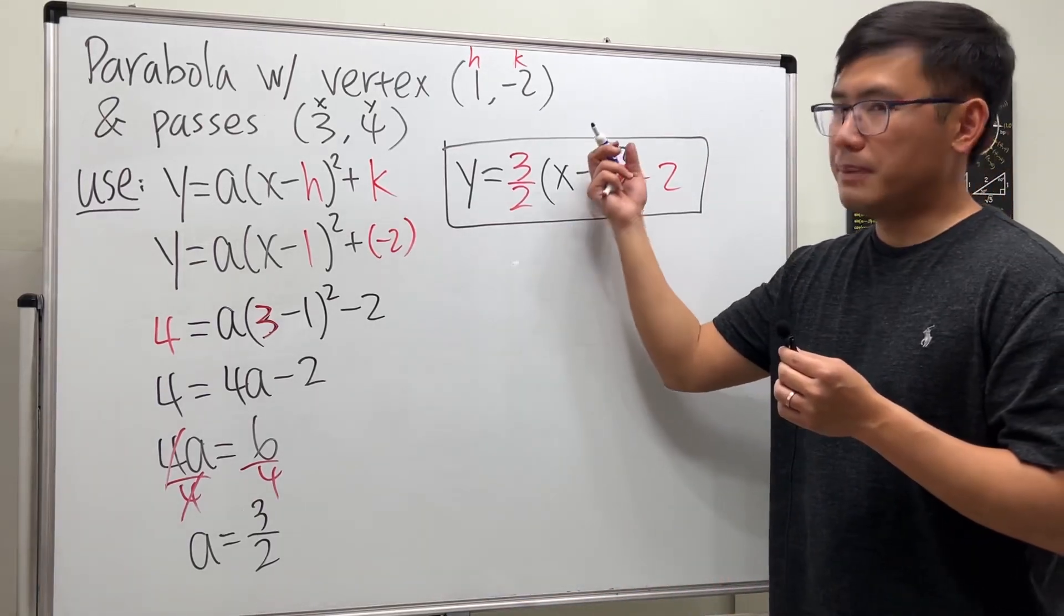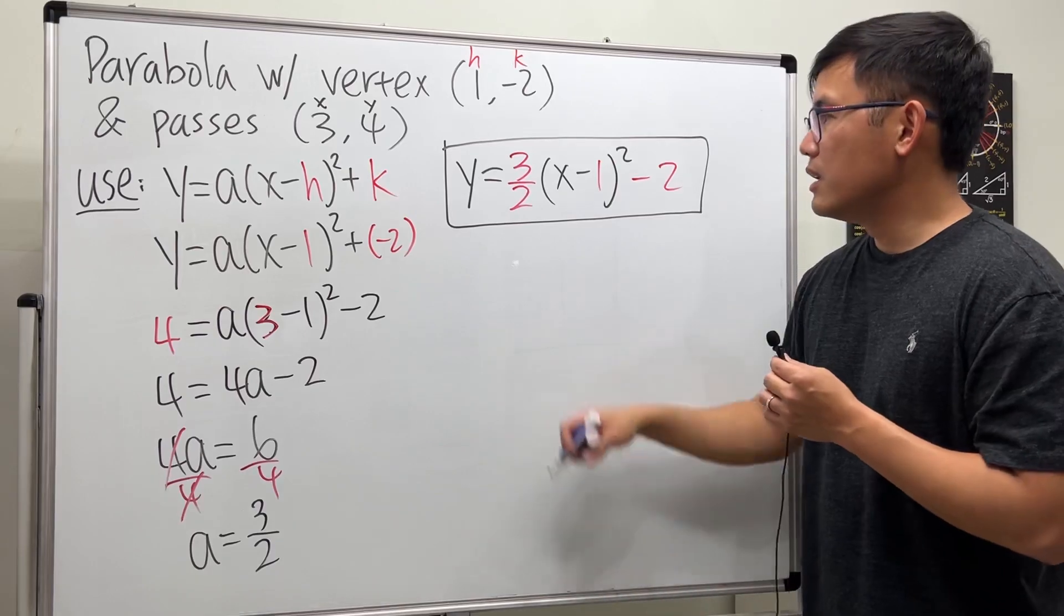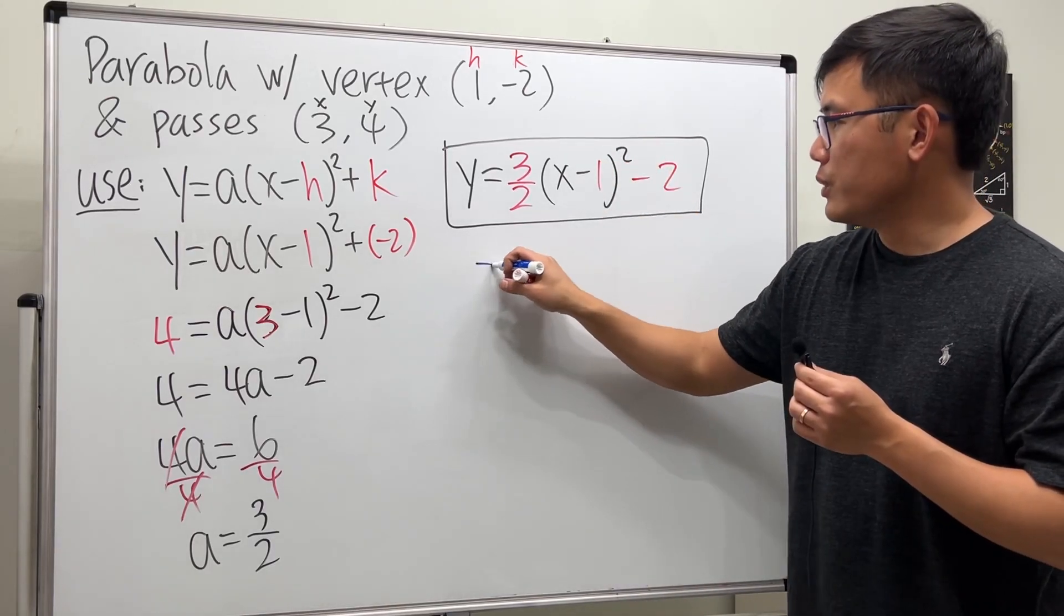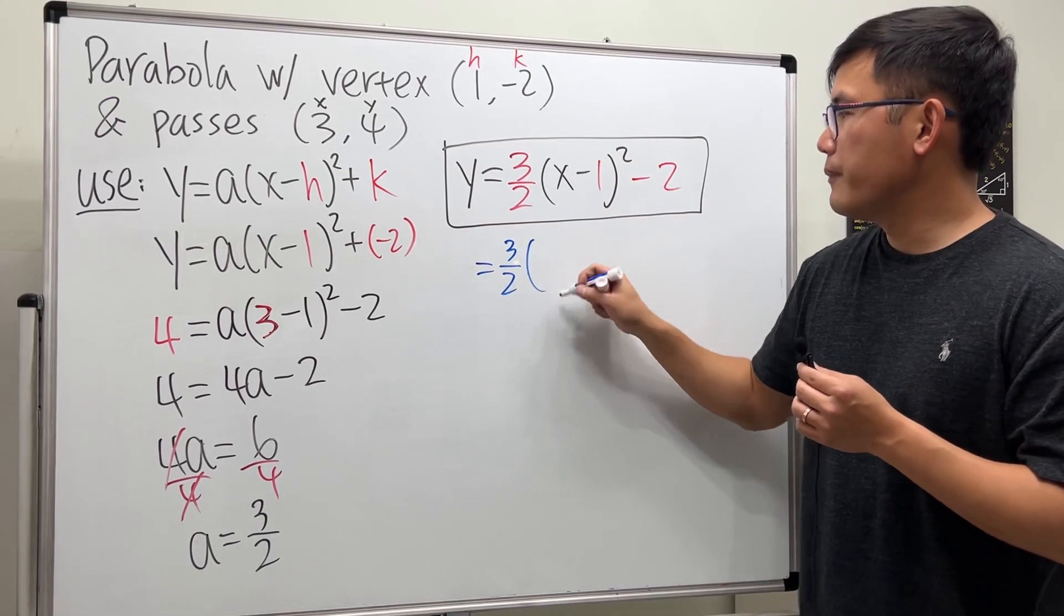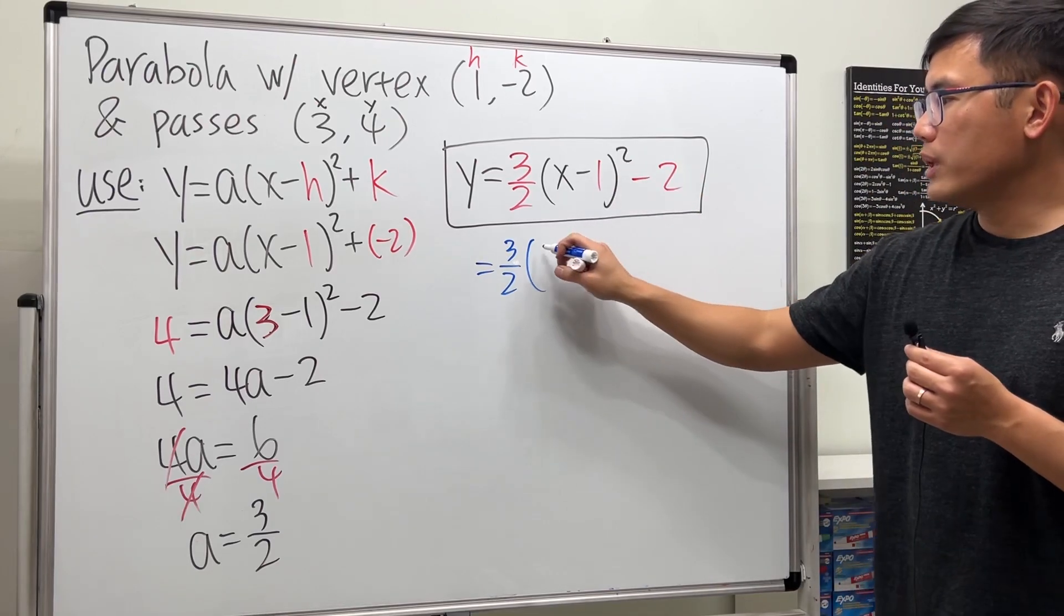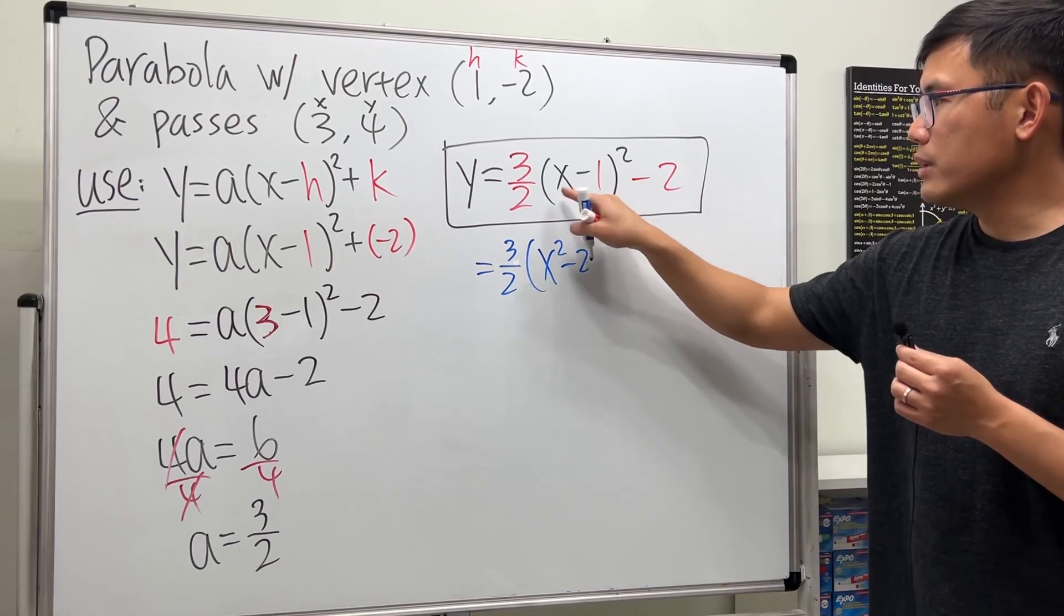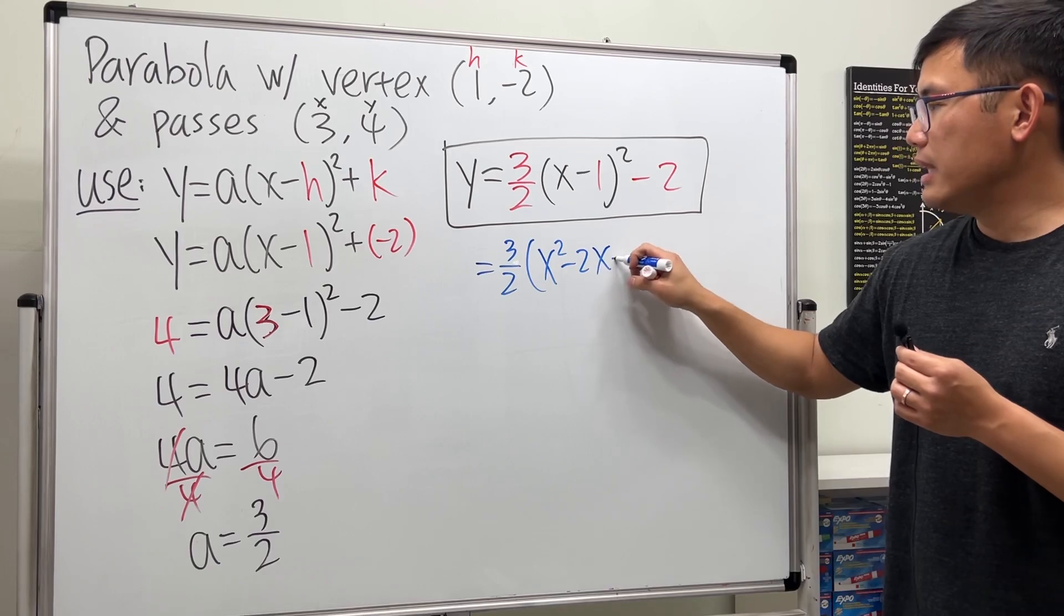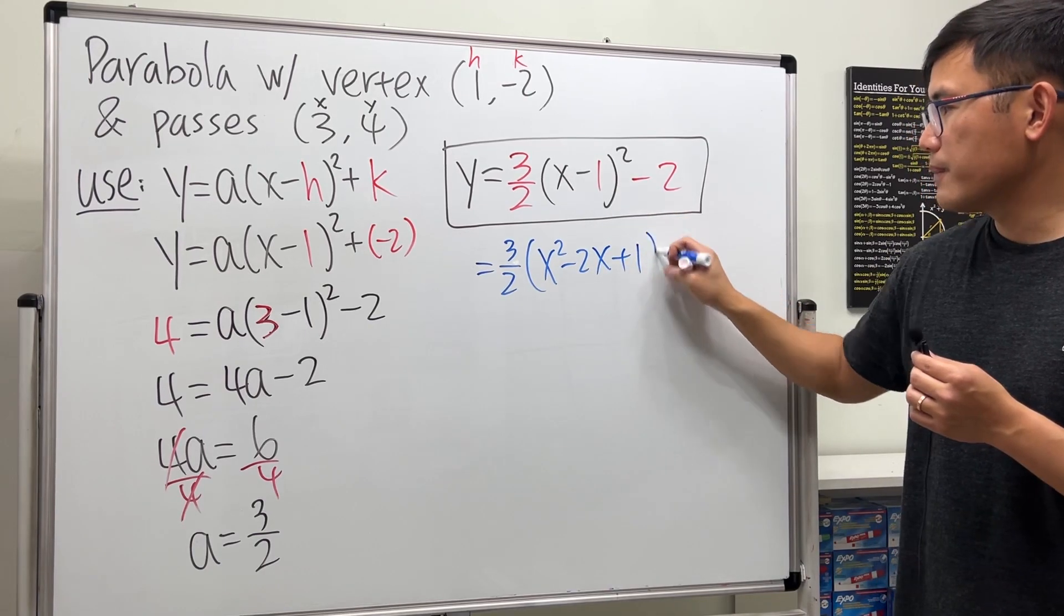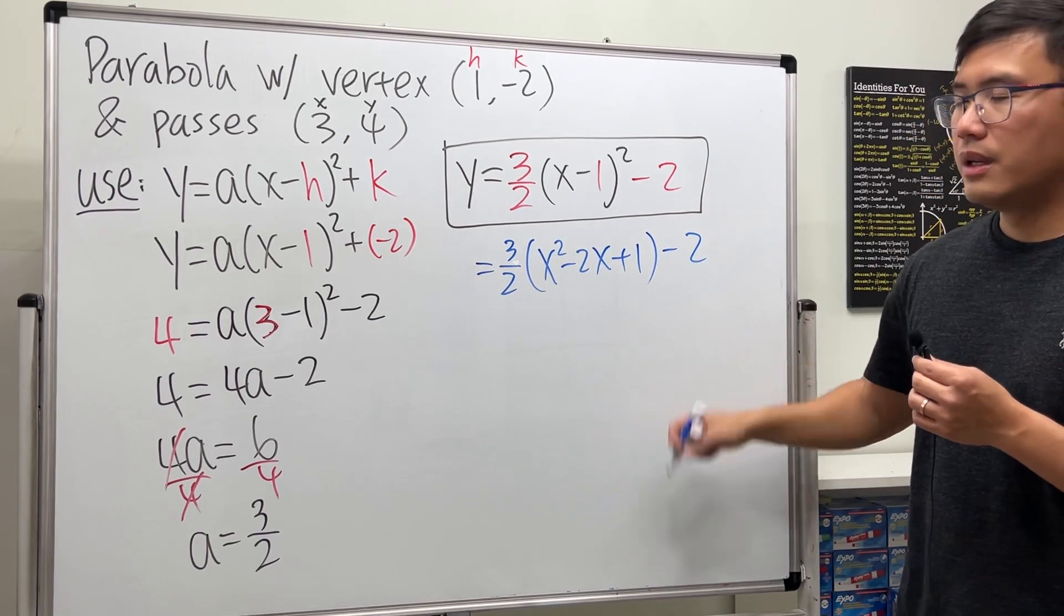You just expand it and then combine the terms. Work this out first though, so we get 3 over 2 at the front. x minus 1 squared we get x squared minus 2x plus 1, and then minus 2.